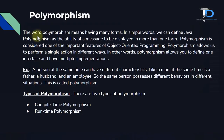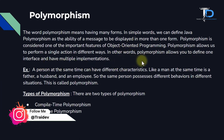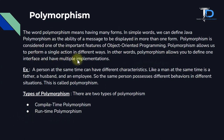The word polymorphism means having many forms or multiple forms. As mentioned, one person is behaving in multiple ways. In simple words, we can define Java polymorphism as the ability to display our message in multiple forms. Polymorphism is considered one of the most important features of object-oriented programming. It allows us to perform a single action in different ways, and allows us to define one interface and have multiple implementations.